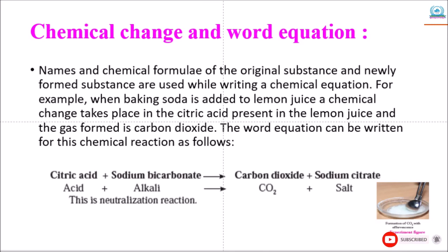Chemical change and word equation. Change in chemical composition of original matter occurs and new substances having different properties and different chemical composition are formed. A chemical equation can be written for a chemical change if the exact change in chemical composition is known. Names and chemical formulas of the original substance.